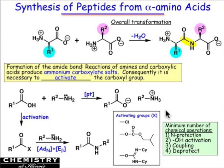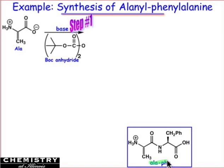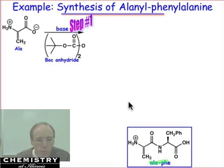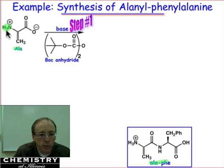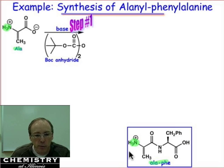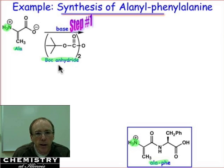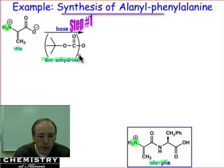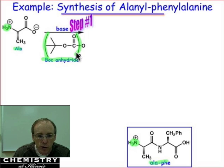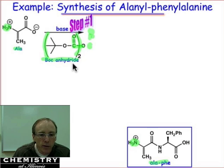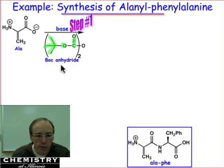Let's take a look at the synthesis of this dipeptide, Ala-Phe, where we'll see each of those four steps. Starting with alanine, we first block the amino group because we don't want alanine's amino group involved in the peptide bond chemistry. We block it with Boc anhydride. I strongly encourage you to write this entire chemical structure out. There are two segments connected to the oxygen — this is an anhydride functional group: carbonyl, oxygen, and then a second carbonyl on the other side. This is t-butyl-oxycarbonyl — that's what Boc stands for: t-butyl-oxycarbonyl anhydride.